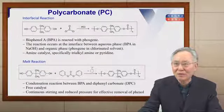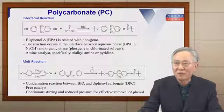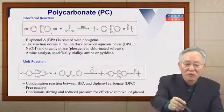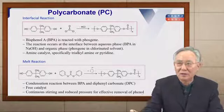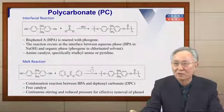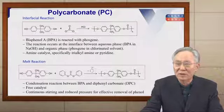Polycarbonate has been synthesized by two different methods. The first method is interfacial reactions; the other method is melt reactions. In the interfacial reactions, bisphenol A is reacted with phosgene to produce polycarbonate with the removal of hydrogen chloride.